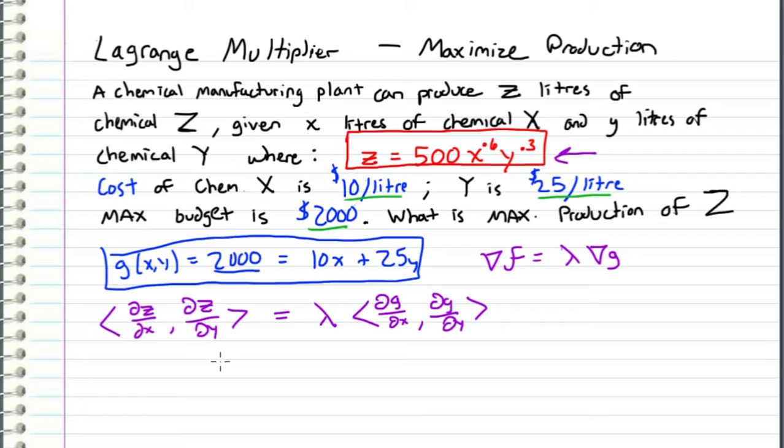So when I plug in for these partials what I get is dz/dx is 0.6 times 500 times x^(-0.4), that's just the power rule, and then y^0.3. And then we differentiate z with respect to y which is going to be 0.3 times 500, x^0.6, y^(-0.7). And this is going to equal lambda, an unknown scalar, times the vector of dg/dx which is just 10 and dg/dy which is 25.